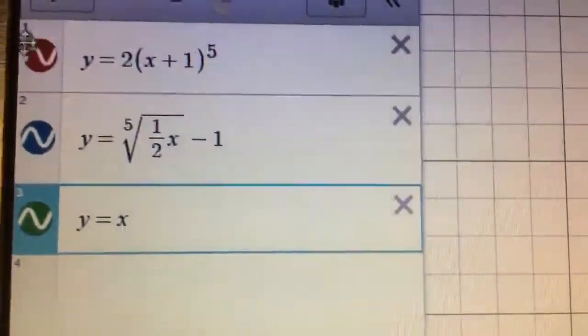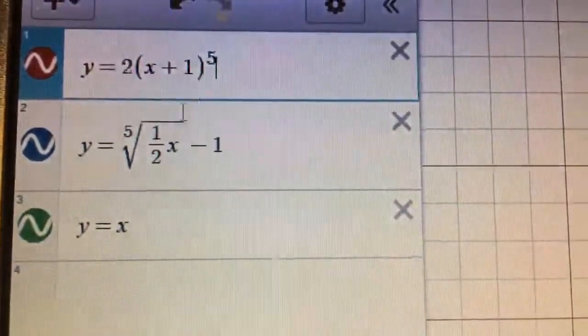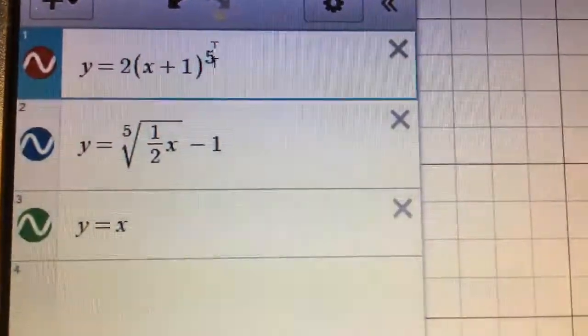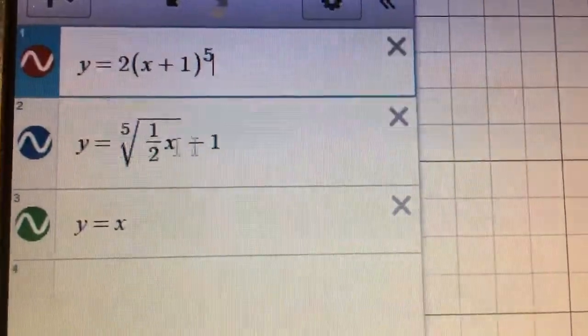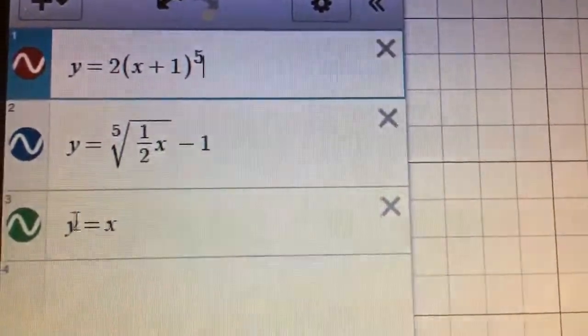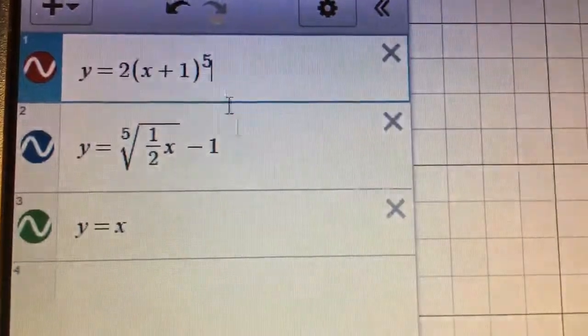Graphically, this is what it looks like. You can see we have our original here, which is a fifth degree polynomial in red. And then in blue, we have our inverse. And in green, we have the line y equals x. So we know inverses are reflections of each other on the line y equals x.